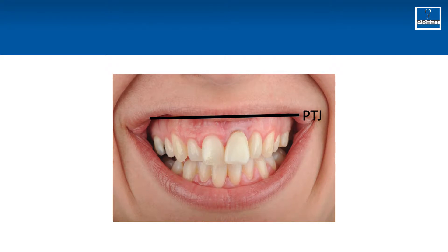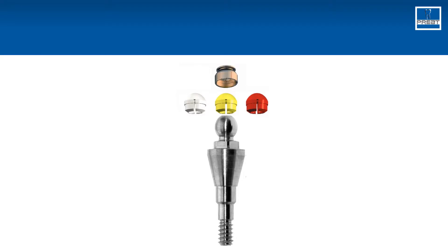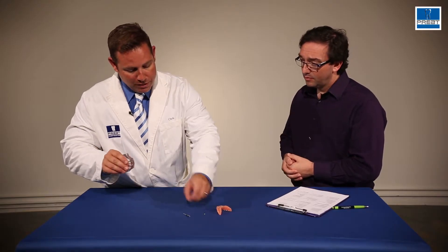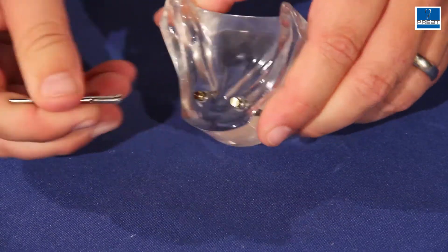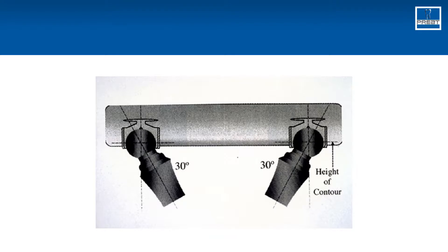So one of the nice things about a ball or spherical attachment is that on these implants, when they're flared in the maxilla, we can simply rotate the females back 30 degrees to compensate for this divergence.